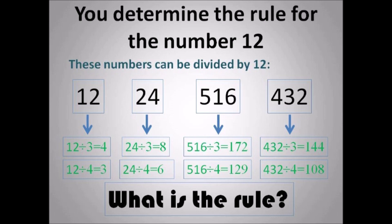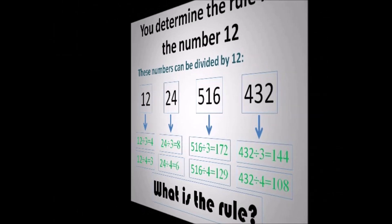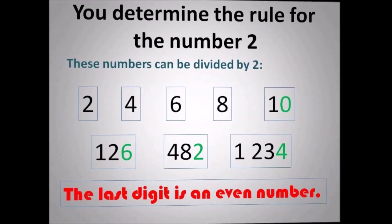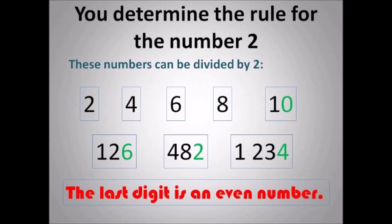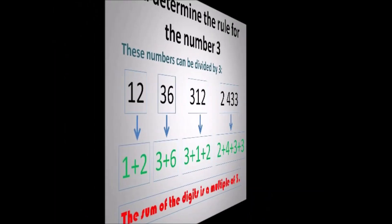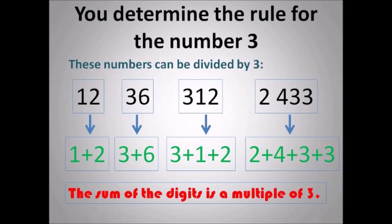This will be the last one. You determine the rule for the number 2. These numbers can be divided by 2. Why? Look at the last digit — the last digit is an even number. Even numbers are 0, 2, 4, 6, 8. So once it ends with an even number, then it's divisible by 2.